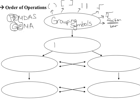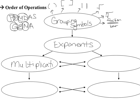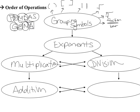After grouping symbols, the next step is exponents — that's the E in PEMDAS. Then after all grouping symbols and exponents, we do multiplication and division. In PEMDAS the M and D are separate, but in GEMA just the M represents both multiplication and division. You do multiplication and division in the order they appear in the problem — so if division comes first, you do it before multiplication. Finally, addition and subtraction — also done in the order they appear.